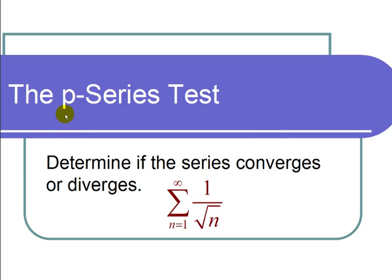This is a video on the p-series test. The question states: determine if the series converges or diverges. We have the sum from n equals 1 to infinity of 1 over the square root of n.